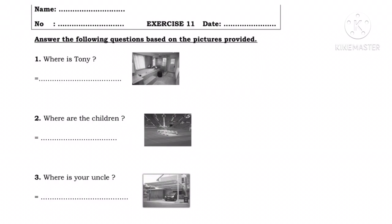Let's start number one. Where is Tony? Di mana Tony? Kalimatnya dimulai dengan kata 'where', jadi pada jawaban kita harus meletakkan keterangan tempat. Coba perhatikan gambarnya — tempatnya adalah di dalam kamar mandi.